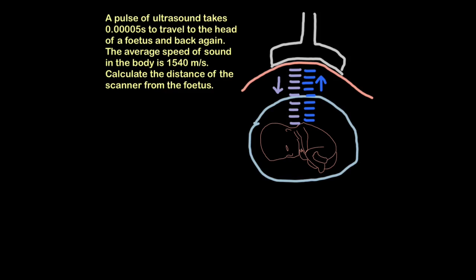Okay, your turn. You can read this and pause it and try and calculate it. The question says: a pulse of ultrasound takes 0.00005 seconds to travel to the head of a fetus and back again. The average speed of sound in the body is 1540 metres per second. Calculate the distance of the scanner from the fetus. So pause it now and have a go.